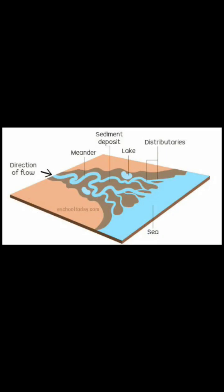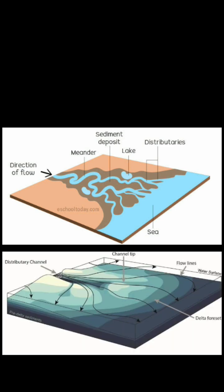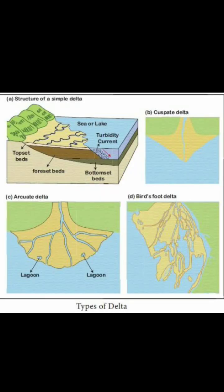As rivers flow, they carry rocks and soil, which are called sediment. When the river slows down at its mouth, it drops this sediment, creating new land over time.